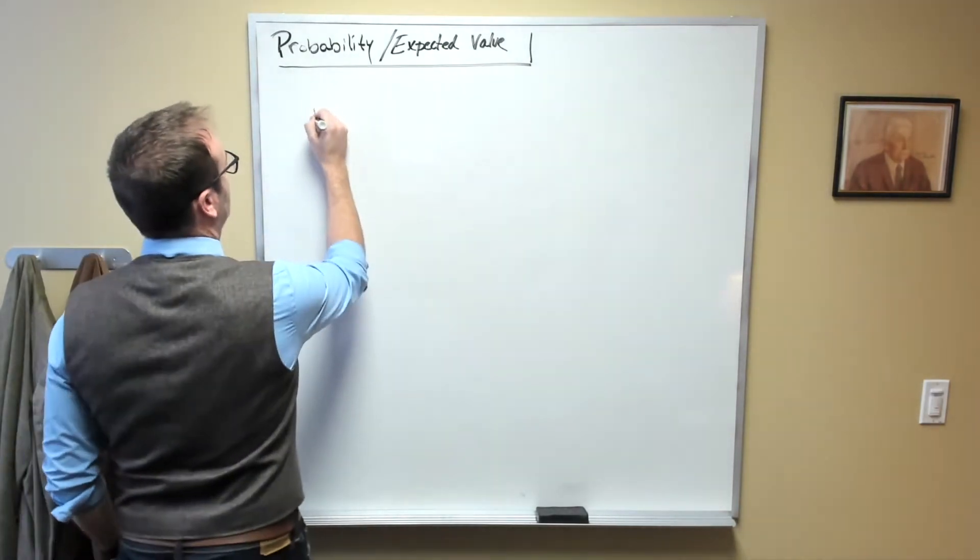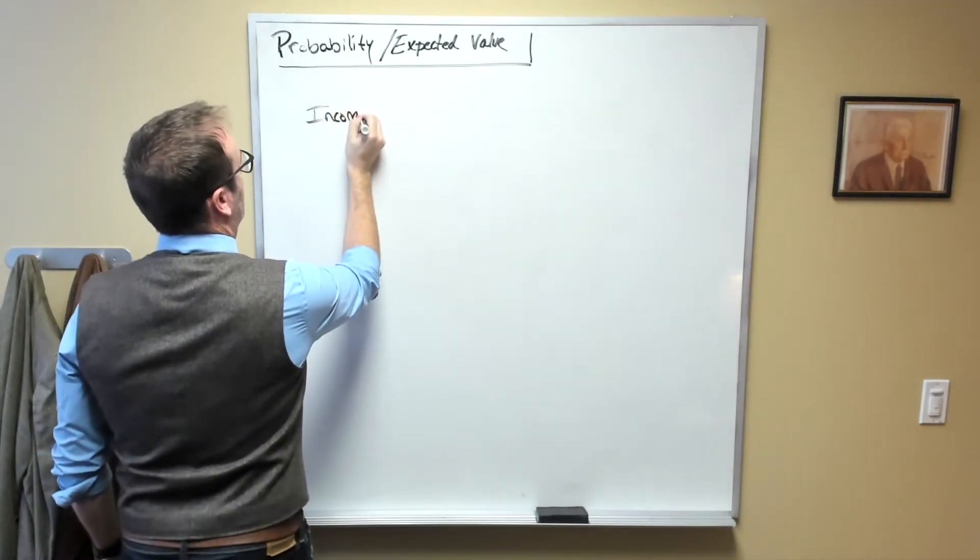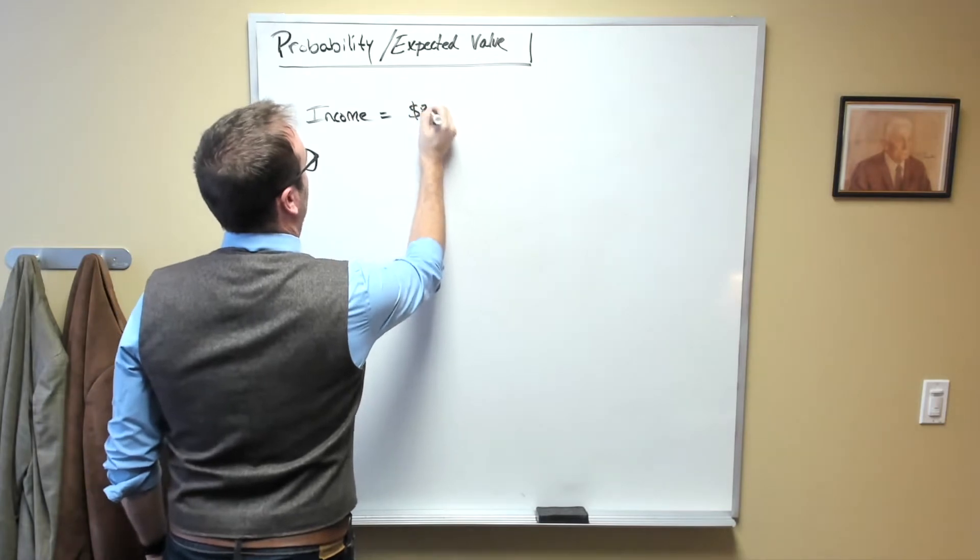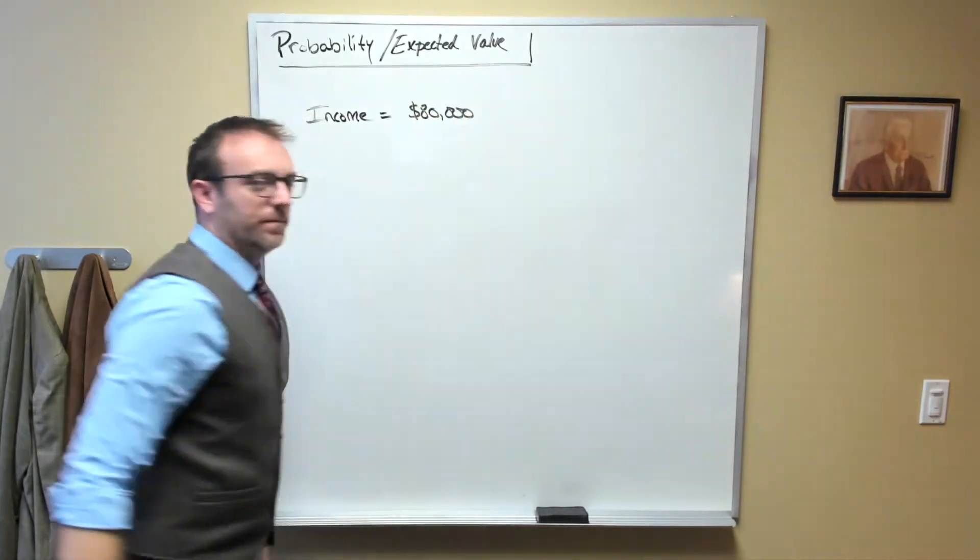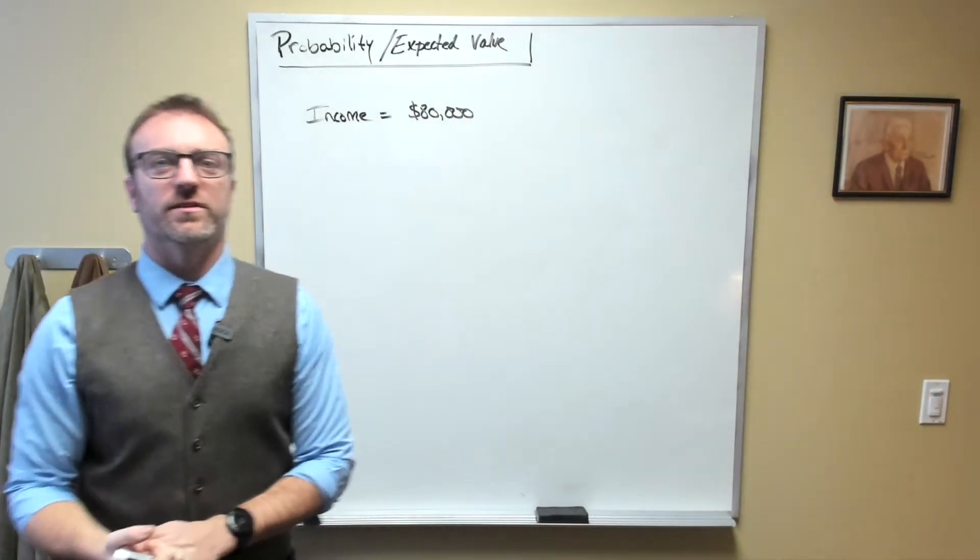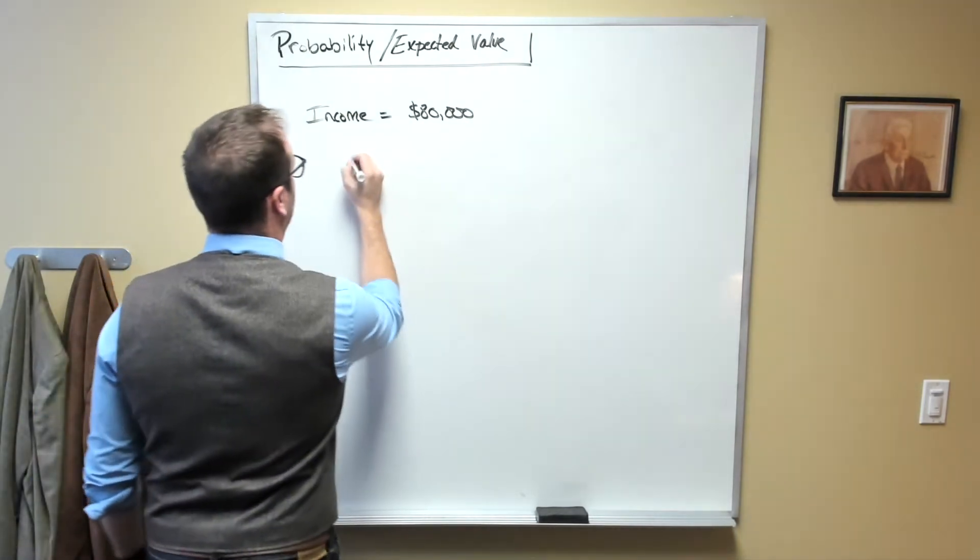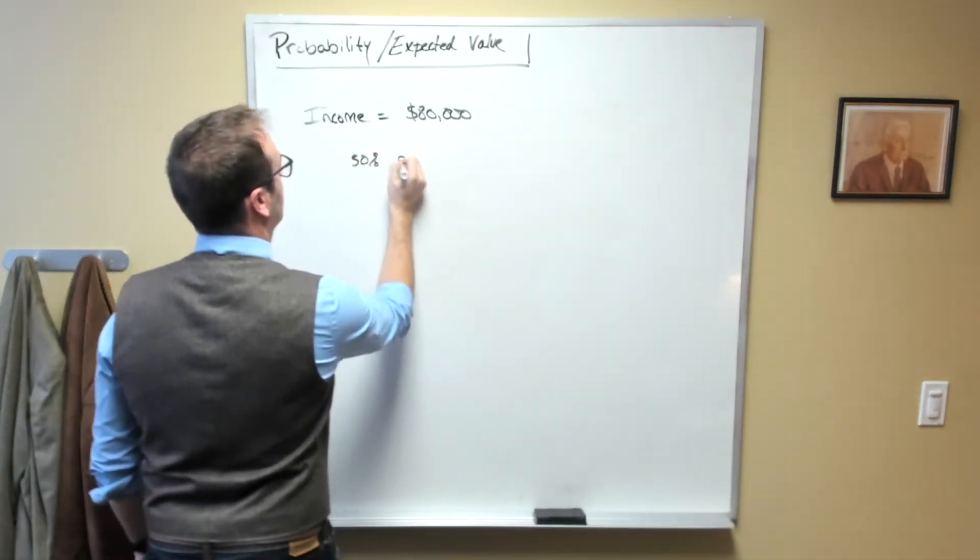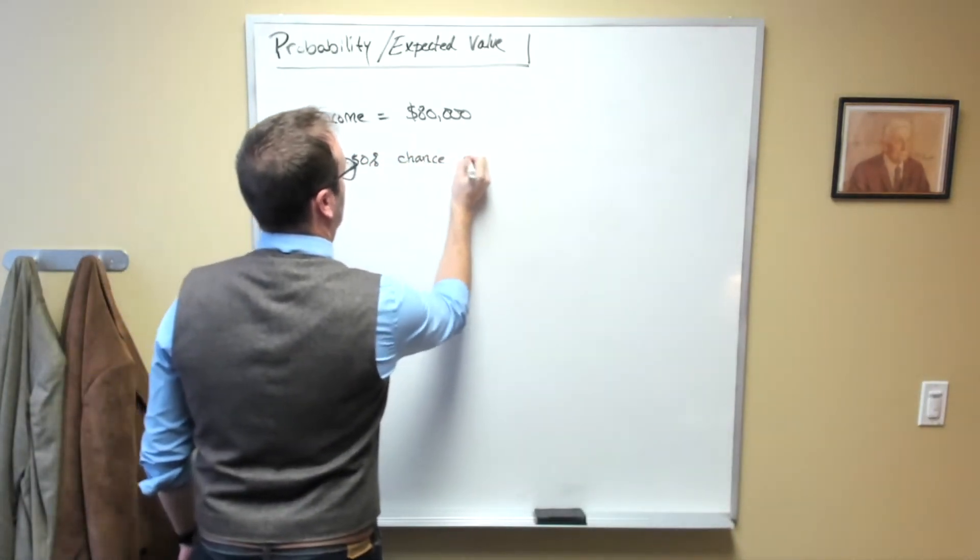Let's suppose that your income was equal to $80,000 per year. So every year you make $80,000. However, there is a 50% chance of getting sick.